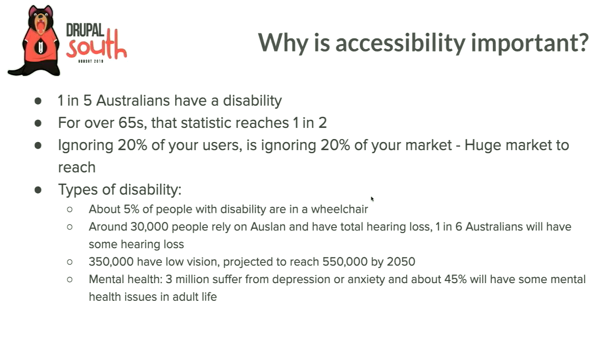What are the types of disabilities? It's a very broad term. About 5% of people with disabilities are in wheelchairs — so although that's the common iconography, it's only a small proportion. 30,000 people rely on Auslan as their main form of communication — that's Australian Sign Language. About 350,000 people in Australia have low vision, predicted to hit half a million by halfway through this century. And mental health is increasingly important: about 3 million people suffer from depression or anxiety, and about 45% of people will have some sort of mental health issue through their life.